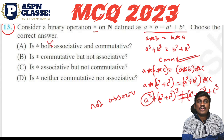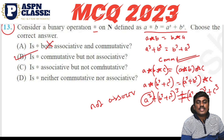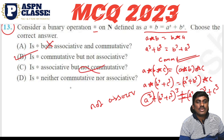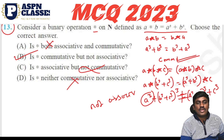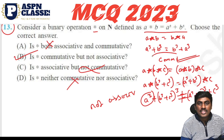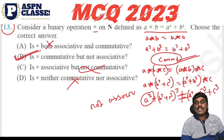So the operation is commutative but not associative. The option 'associative and commutative' is wrong. 'Associative but not commutative' is wrong. 'Commutative but not associative' — yes, this is correct. Option B is the right answer.